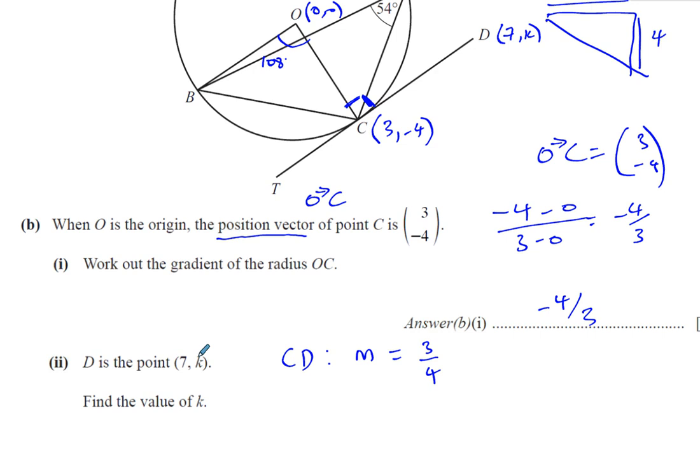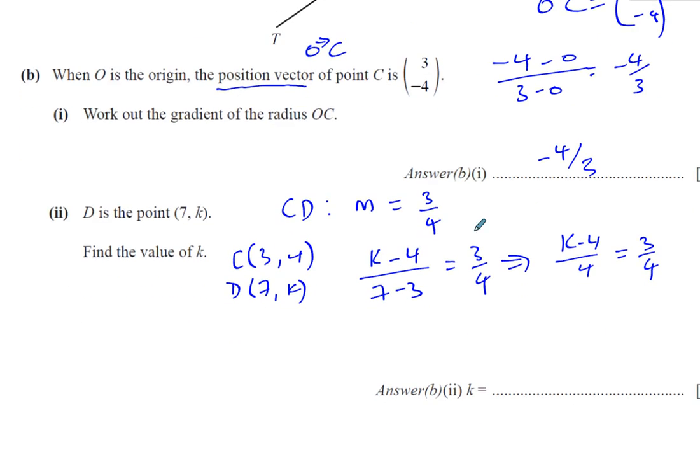I know that D is the point (7, k) and C is the point (3, -4). We worked that out in the first part of the question. I've got the gradient, so there's only one unknown here. If I take the change in y, which is k minus (-4), over the change in x, 7 minus 3, that equals 3/4. So I have (k + 4)/4 = 3/4.